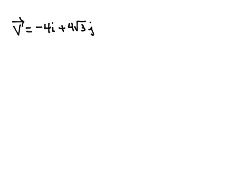Vector v is equal to negative 4i plus 4 square roots of 3j, and we want to find the direction angle of vector v.